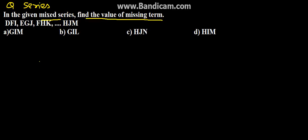So here we have been given a series: D F I, E G J, F H K, then there is a missing series, and then we have H J M. So we need to find the missing term over here. We have been given options: G I M, G I L, H J N, and H I M.